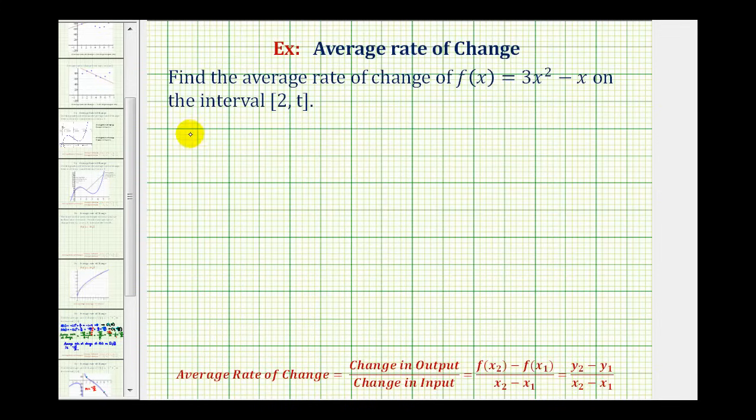We'll start by finding f(2). That would be 3 times 2 squared minus 2. Well, 2 squared is 4, times 3 is 12, 12 minus 2 is 10. So f(2) equals 10, which means when the input is 2, the output is 10. We could express this as an ordered pair: when the x-coordinate is 2, the y-coordinate is 10.